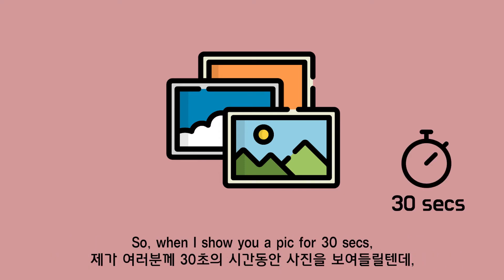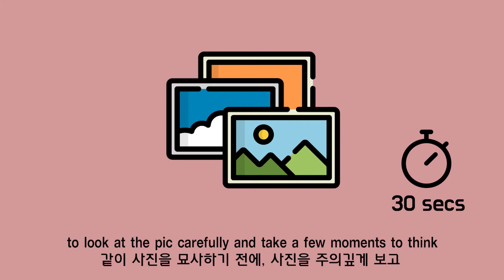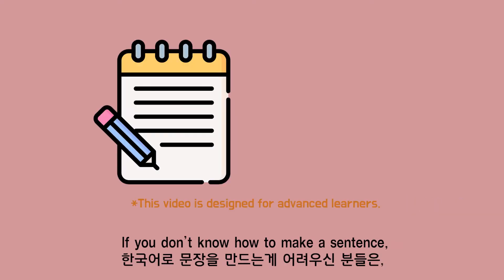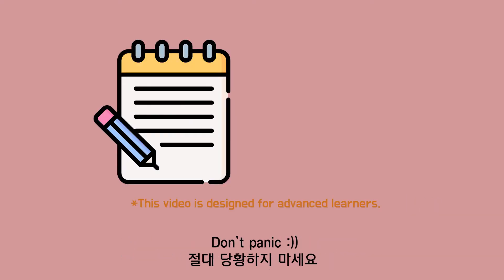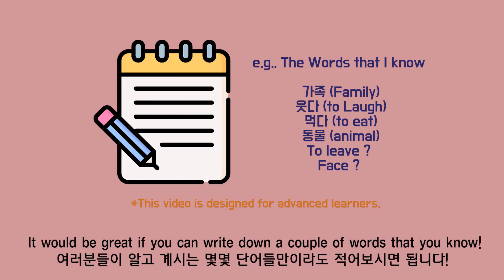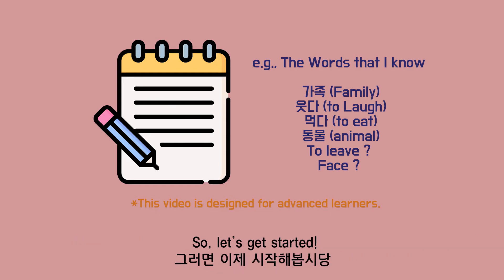When I show you a picture for 30 seconds, what you need to do is look at the picture carefully and take a few moments to think before we describe the picture together. If you don't know how to make a sentence, don't worry and don't panic. Please just focus on the vocabulary part — it will be great if you can write down a couple of words that you know. So let's get started.